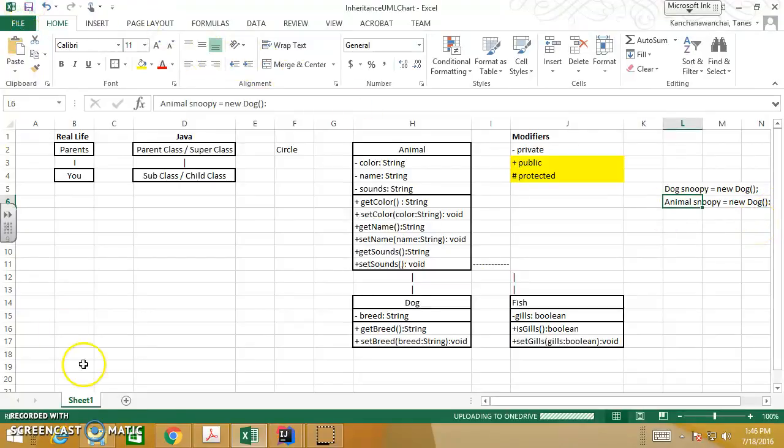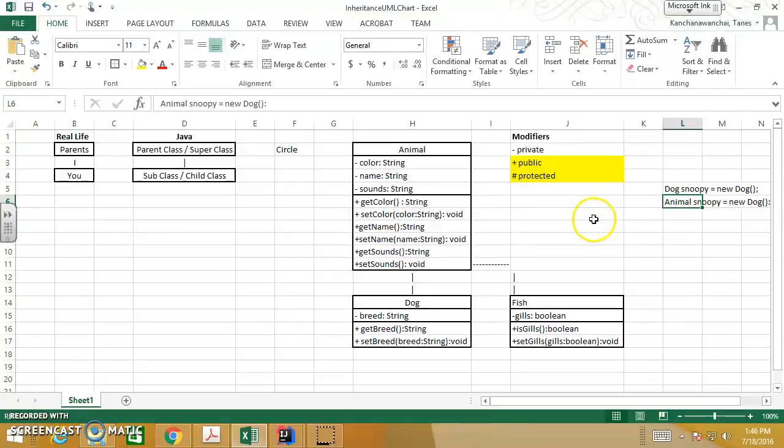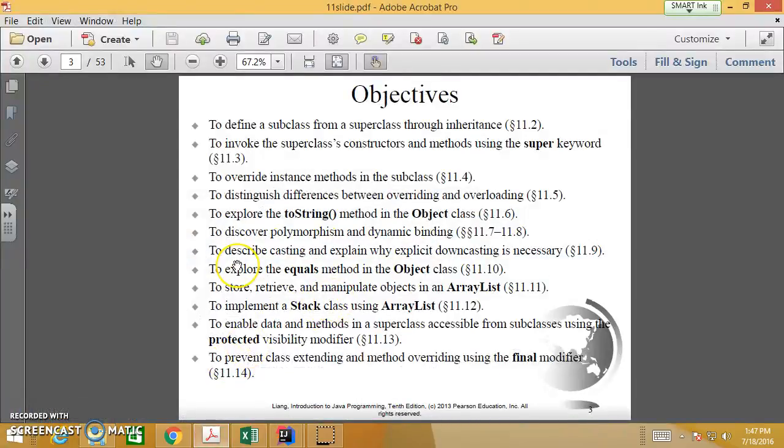We're going to look at this in detail in the slides here, because this is going to have the concept of dynamic binding involved when we start to call the methods from Animal and the methods from Dog. You look at that now.